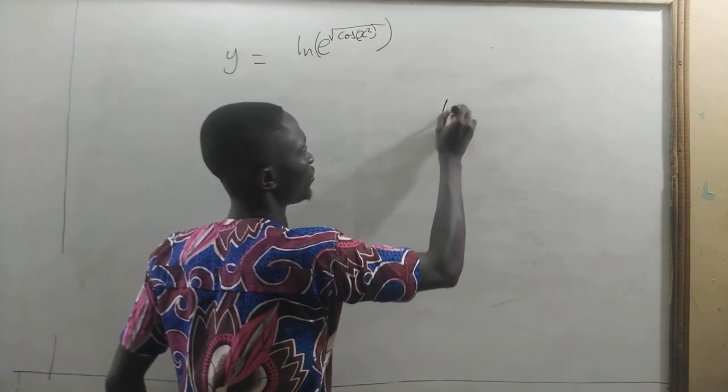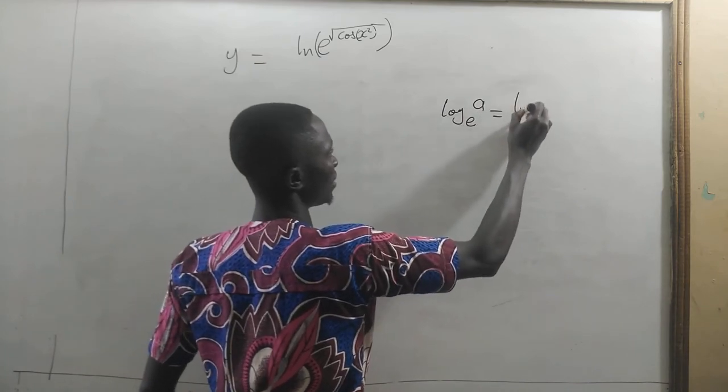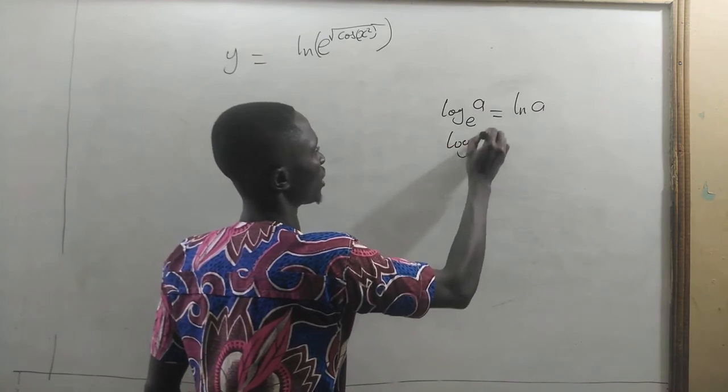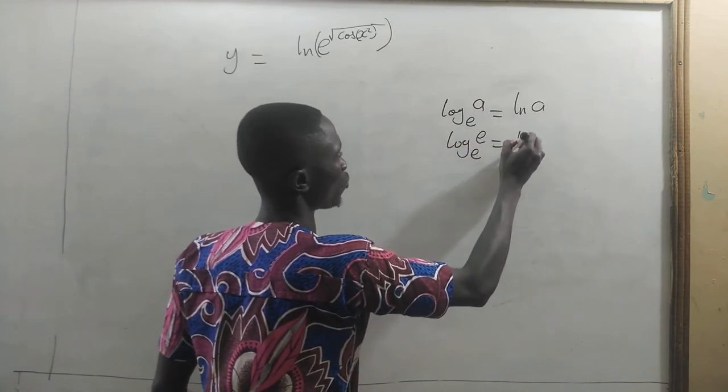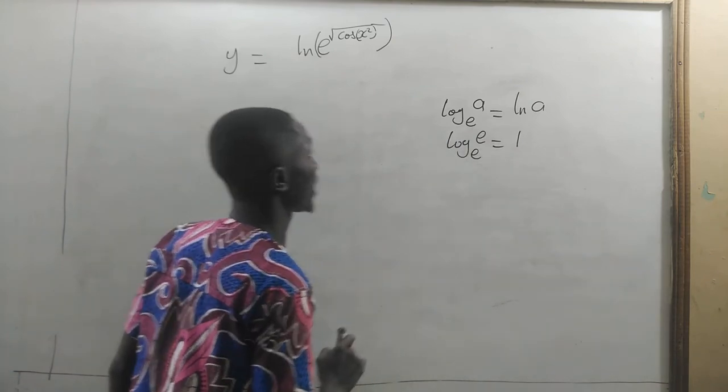Remember that if you have log a to the base e, we will write it as ln a. So we can write log e to the base e equal to 1, because log of a number to the base of the same number is 1.